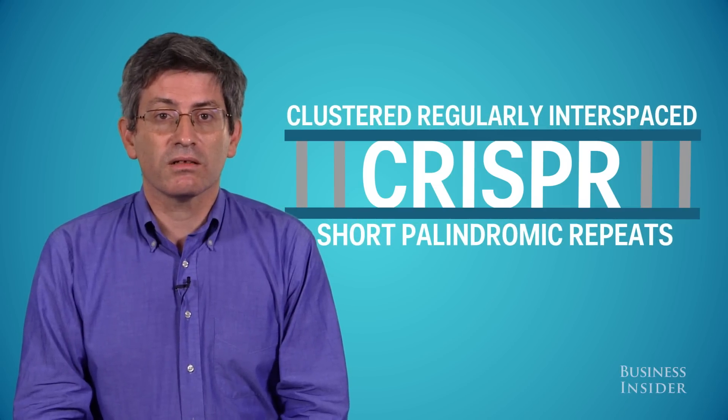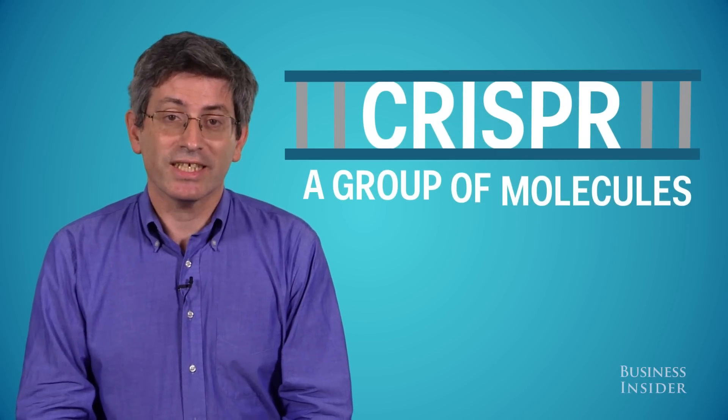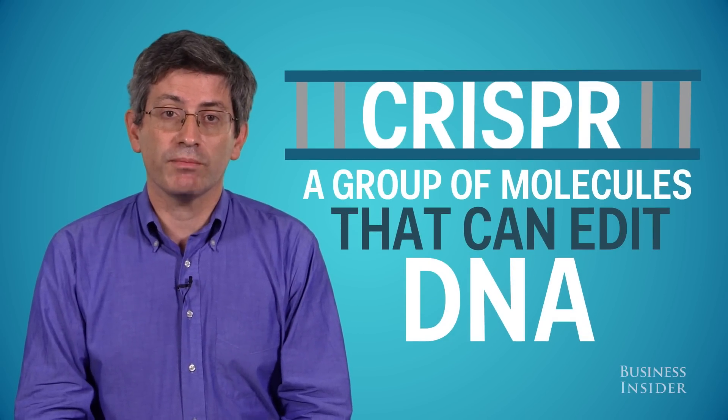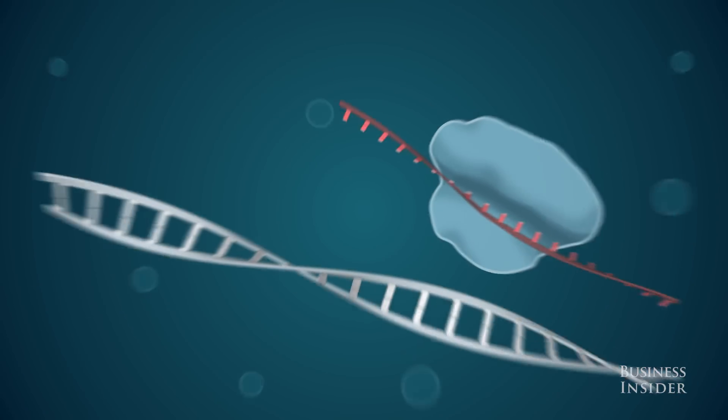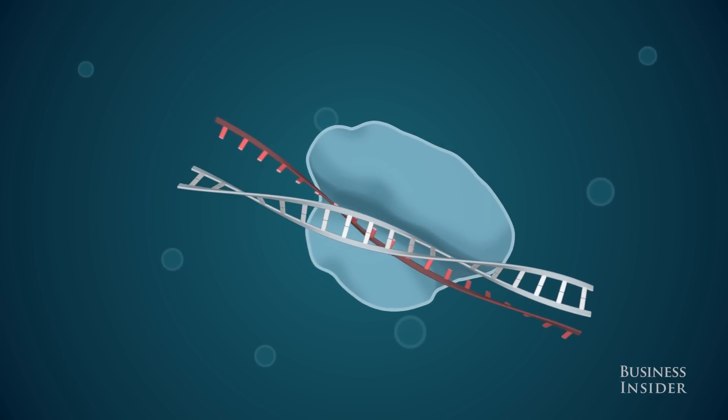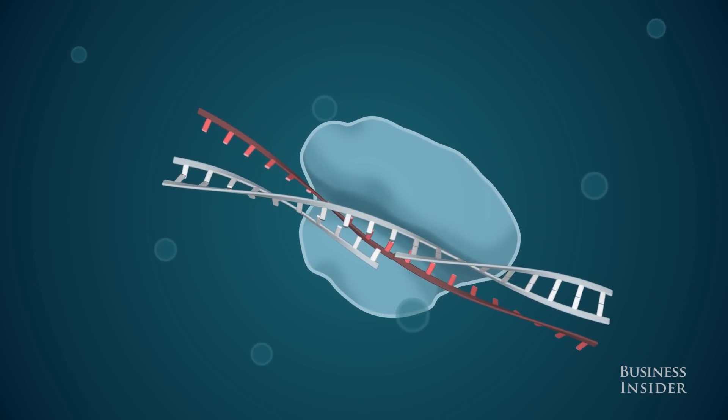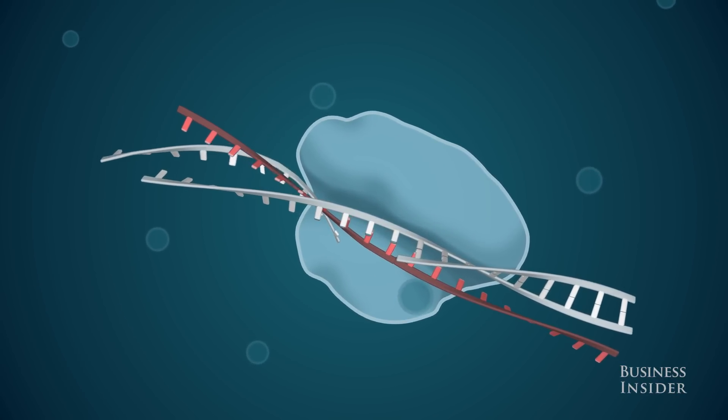CRISPR is basically a group of molecules that can edit DNA. You can fine-tune them to go after any piece of DNA you want. They can cut that DNA and then you can actually insert a different piece of DNA in its place.